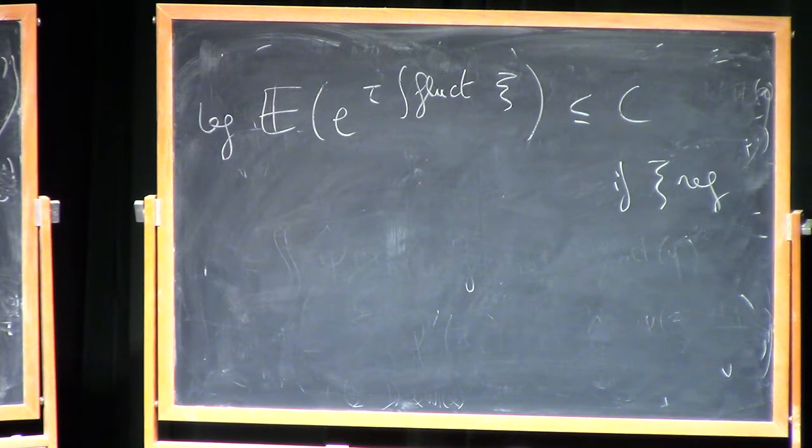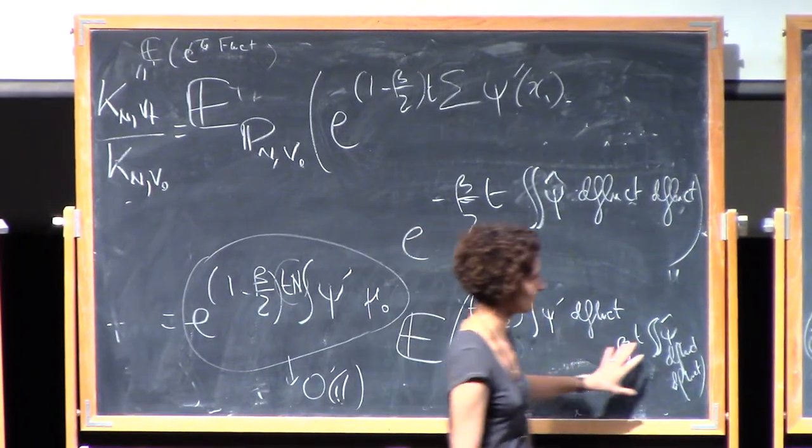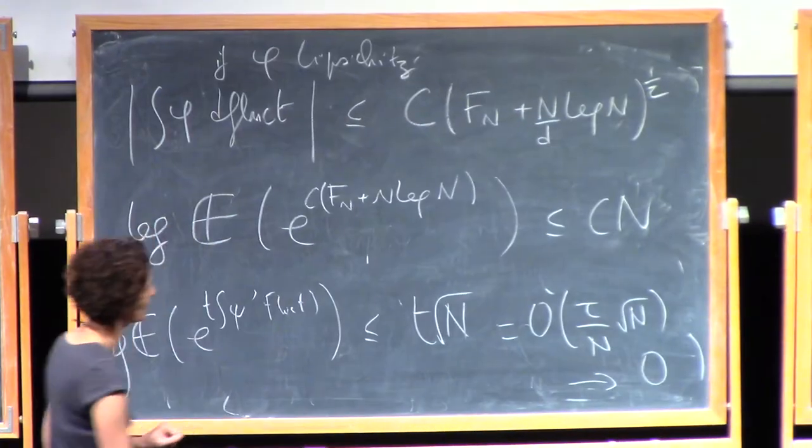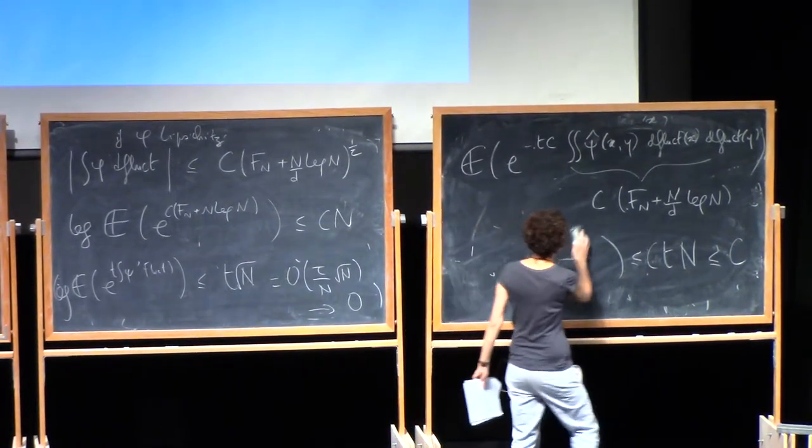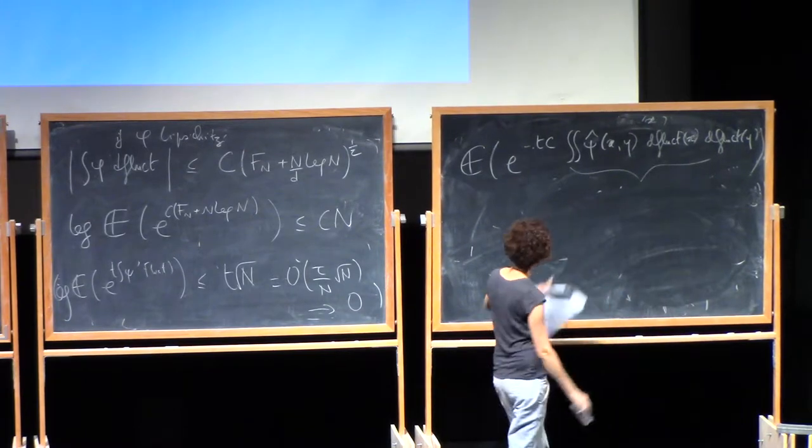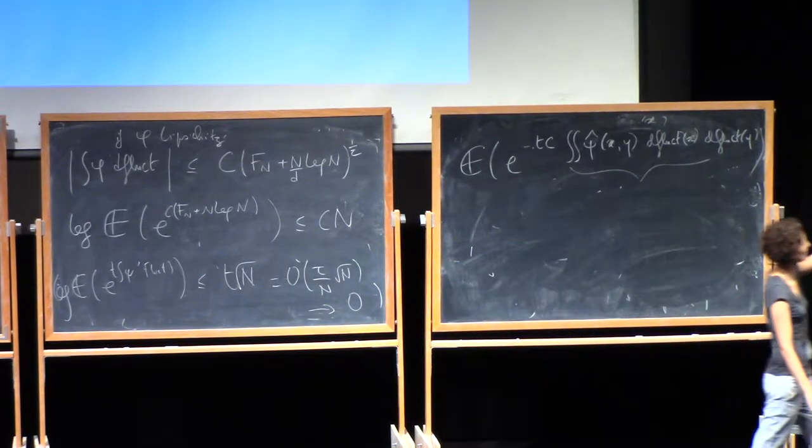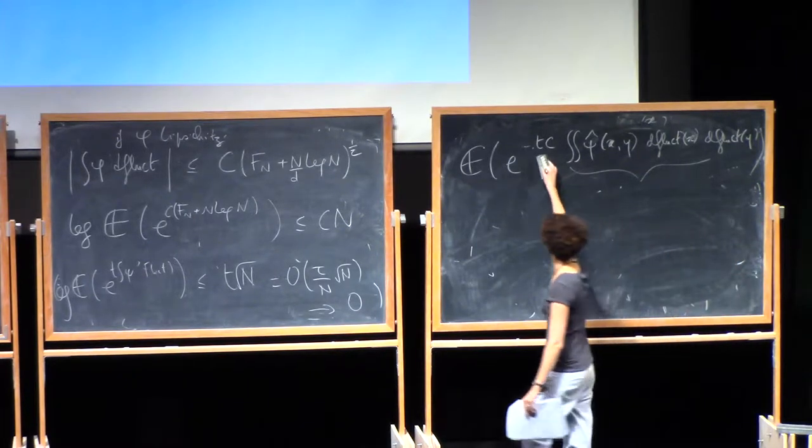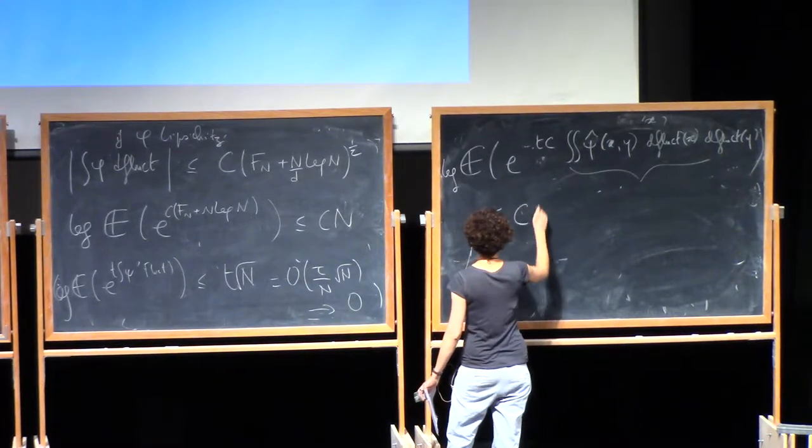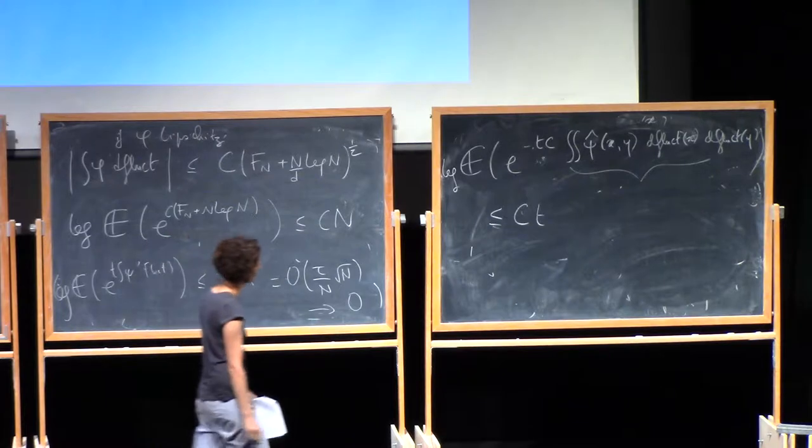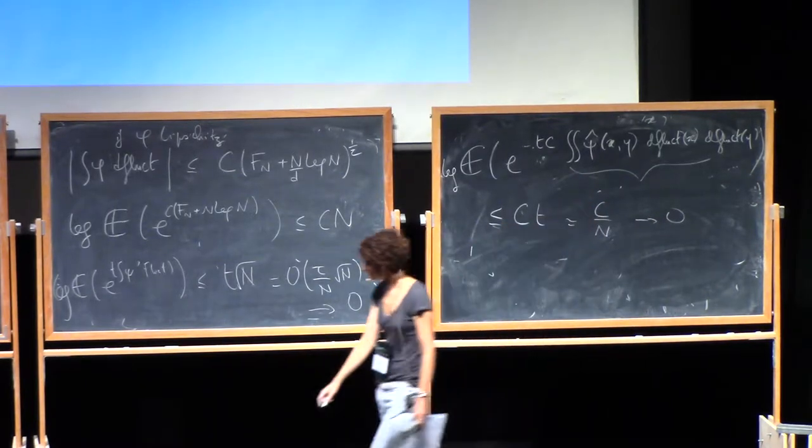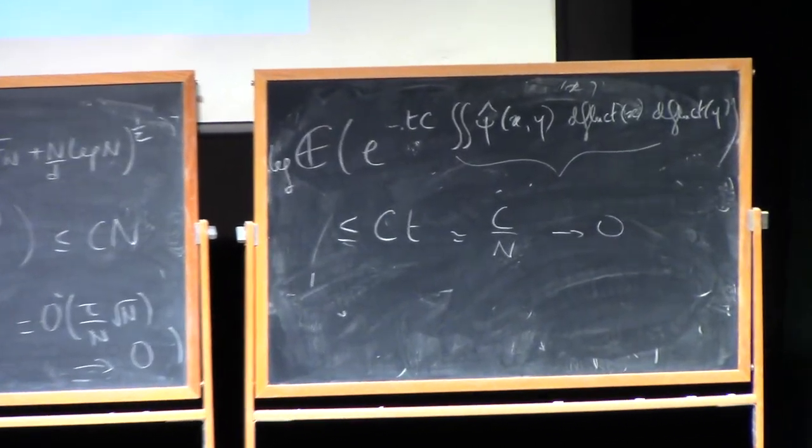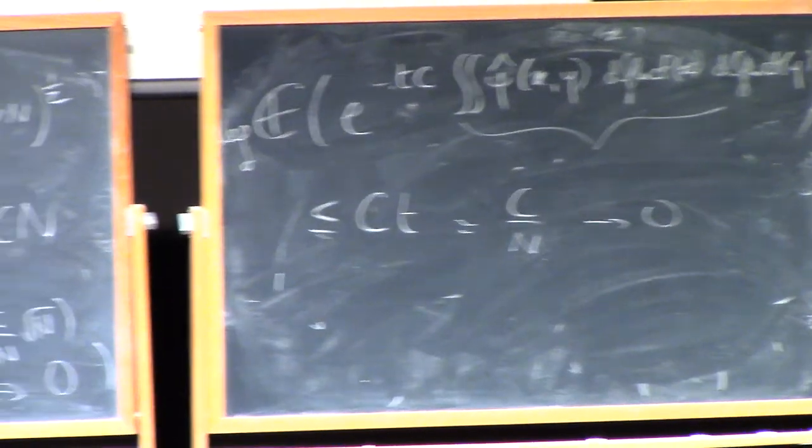But now I can bootstrap this information. I can go back to my calculation. This term I already knew it was small, it was contributing one over root n anyway. But the other term that was troubling me, I had a control by an order of a constant, but now I can upgrade this. And since I have essentially something of the form of exponential moments of a fluctuation, it's essentially of that form. But it has a t in front. So the log of that is going to be bounded by ct. And this is like c over n, and so it goes to zero. And that finishes my proof because once I put everything, all the pieces together, I find that this term, I can treat it as one.